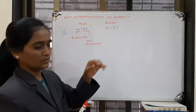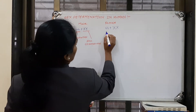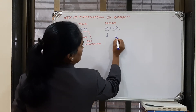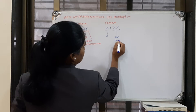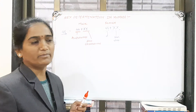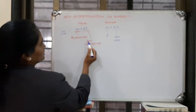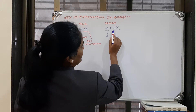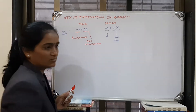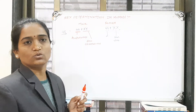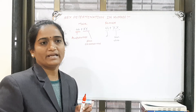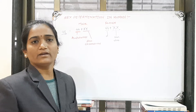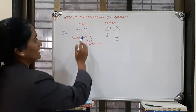In females, what is the genotype? Same as in male — 44 autosomes and two sex chromosomes. But the difference is that in males the sex chromosomes are X and Y, while in females both sex chromosomes are X. Female does not have a Y chromosome.